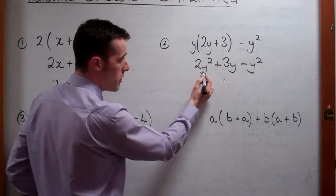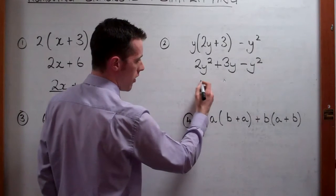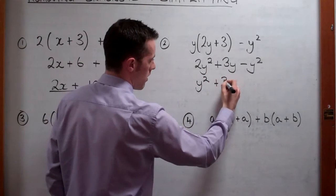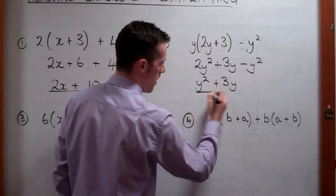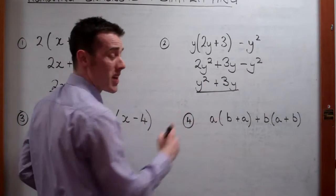Now we've got 2y squared. We can't add 3y to that but we can take away the other y squared here. We've got y squared add 3y. And that's our final answer because we can't add together y squared and y because they're different.